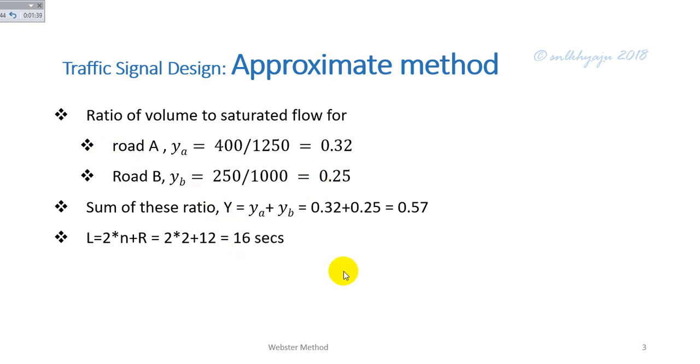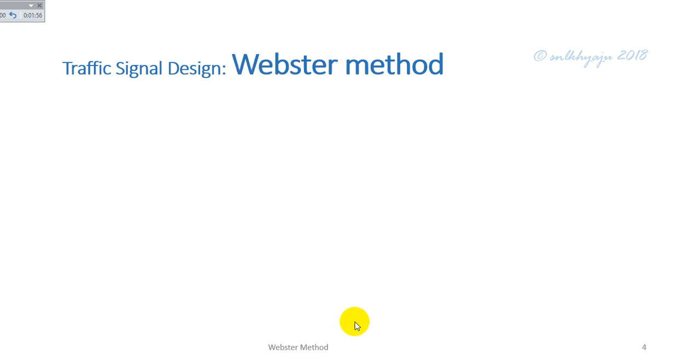Then optimal cycle is calculated from the relation C_o equals 1.5 times L plus 5 divided by 1 minus Y, and is calculated as 67.4 seconds.